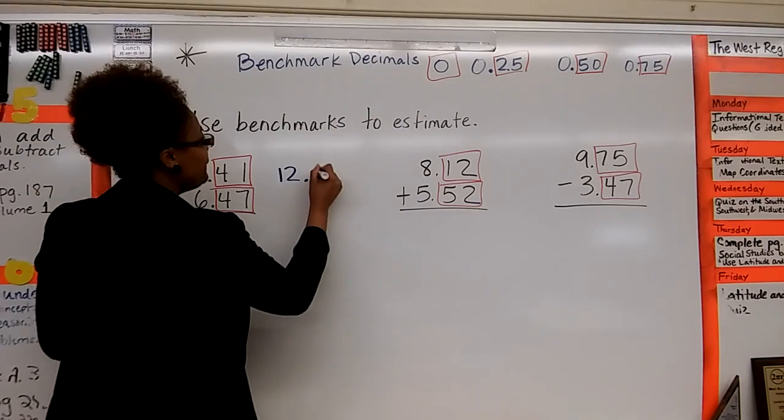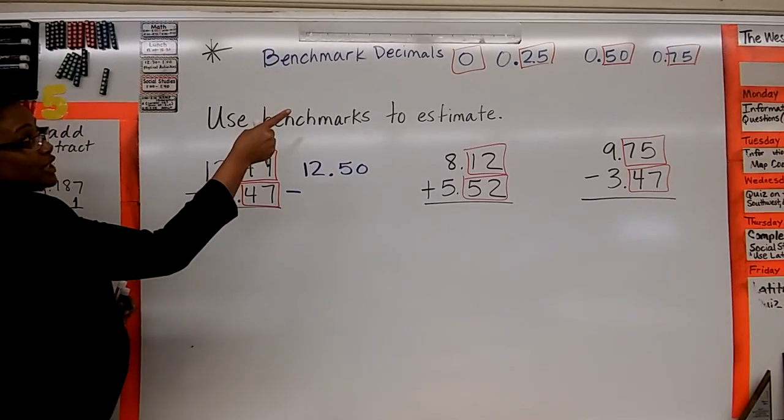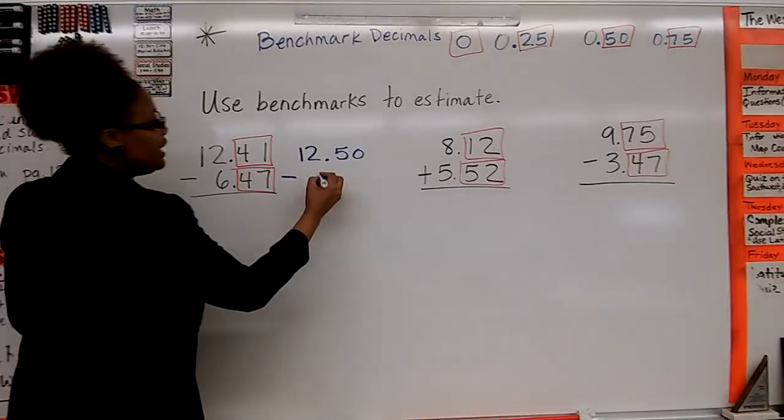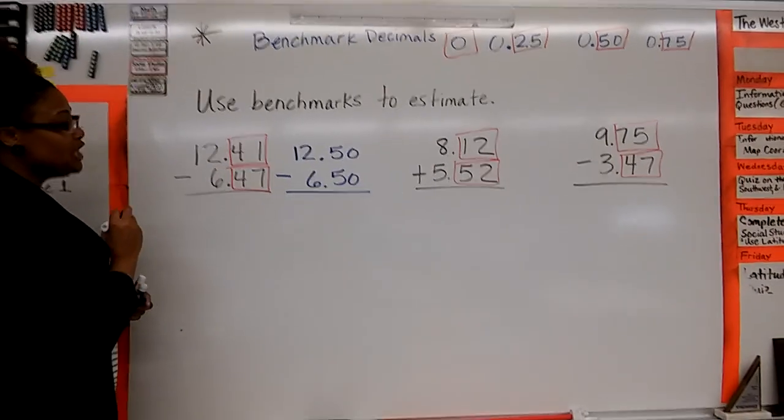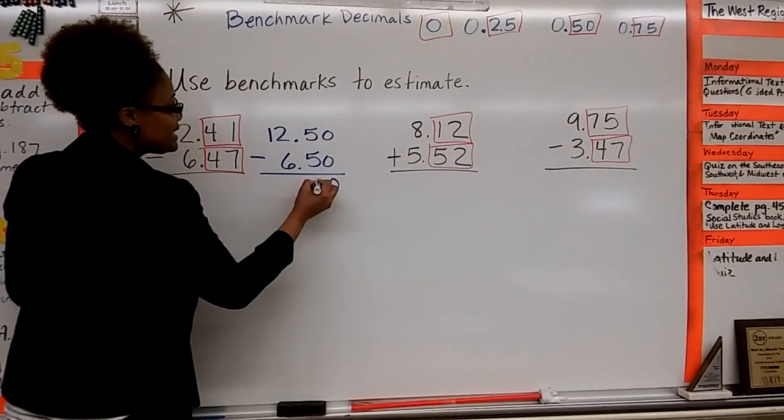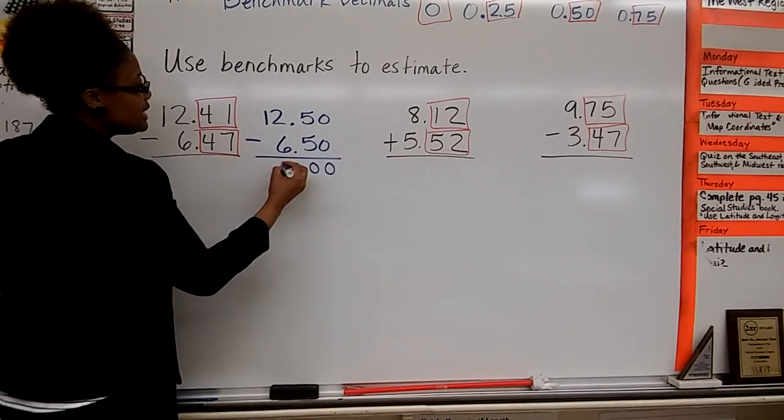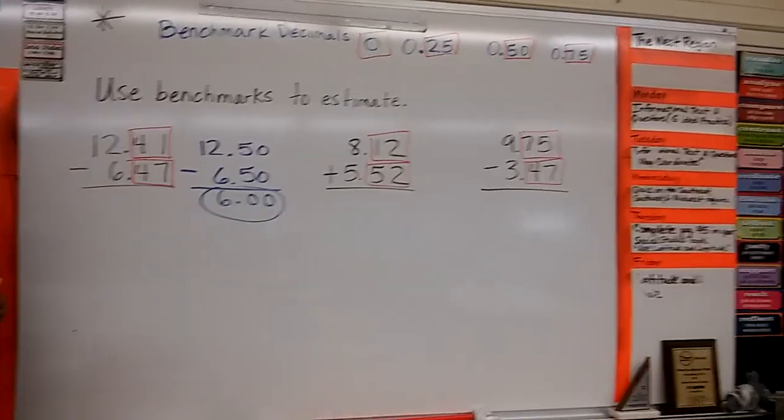So we have 12 and 50 hundredths. And we're subtracting, which benchmark decimals close to 47 hundredths? 50 hundredths. So we have 6 and 50 hundredths. How many hundreds do we have? Zero. How many tenths? Zero. And then 12 ones minus 6 ones is 6. All right, raise your hand if you have 6. All right, good.